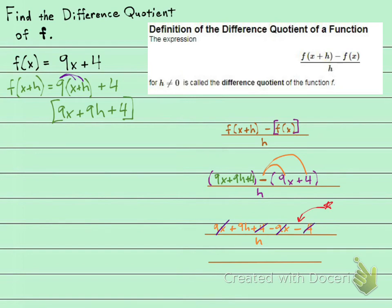So now I have 9h over h. And the two h's are going to reduce. So this h cancels with this h. And that leaves me with 9.